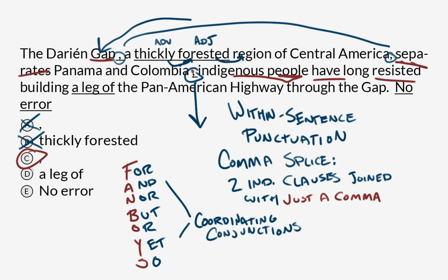So option C is our answer. Let's look at D real quick. 'A leg of the Pan-American highway' — this is a conventional expression using 'leg' as a metaphor for part of a route, like 'a leg of the trip.' If the entire trip is meant to comprise an entire body, a leg of the trip is some portion of it. I don't know the origin of that, but it is a conventional expression in English, so this is not an error.